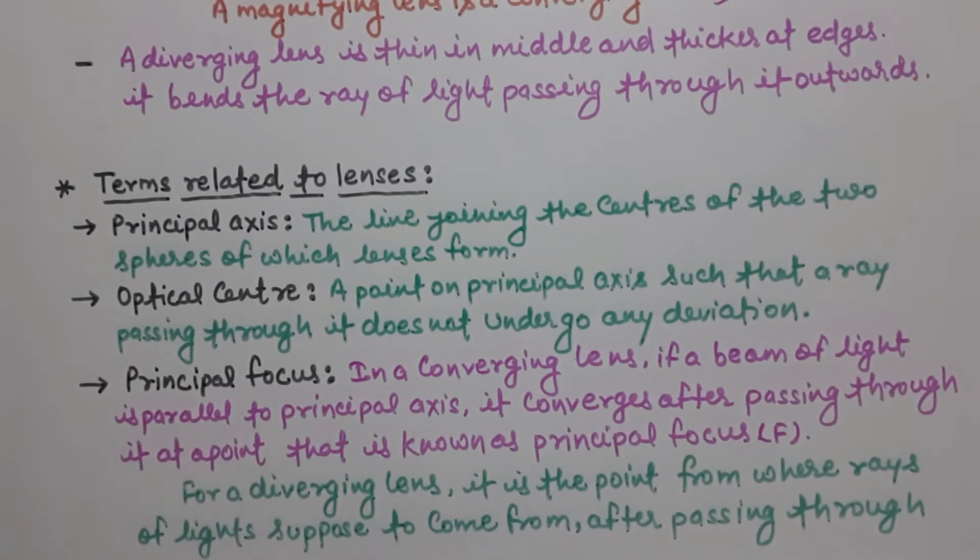Next thing is principle focus. Now principle focus in converging lens, if a beam of light is parallel to principle axis, then it converges after passing through it at a point. And that point is known as principle focus.